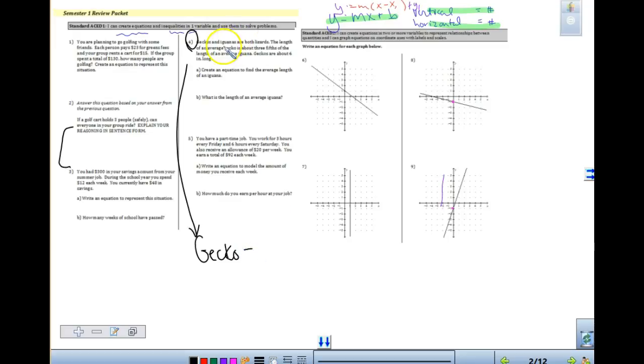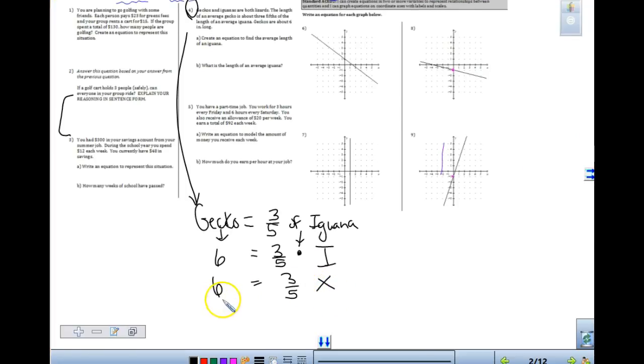So it says a gecko, and it says the length of the gecko is, and in this case, about three-fifths of the length of the iguana. So sometimes writing it out in words, the gecko is three-fifths of the iguana, right? Do we know, so if I put it in words, of usually means multiply, right? Do we know how long the iguana was? No. So we don't know. Can you use i for iguana? I don't care. Can you use x? Sure. Three-fifths is going to stay there, right? So it's three-fifths x equals. Do we know how long our gecko was? Yes. We told it. It was six.